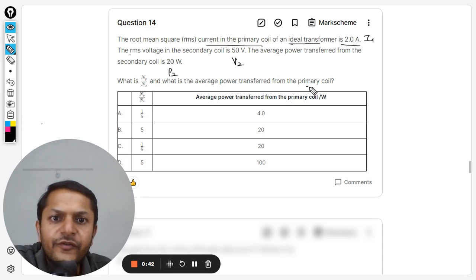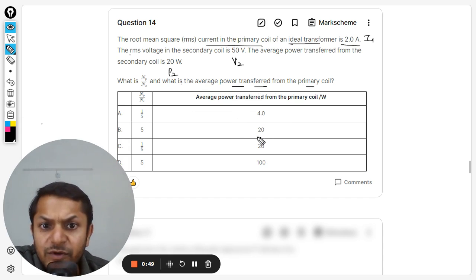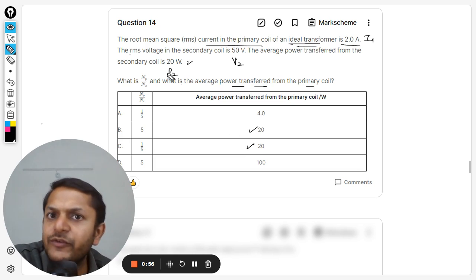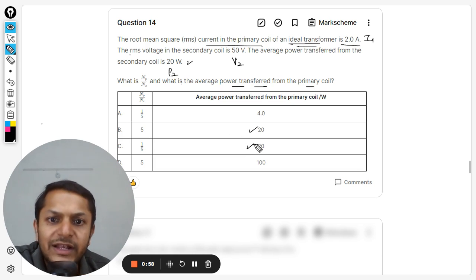What is the average power transferred? Well, the average power transferred will be exactly the same, isn't it? Because it says that it is an ideal transformer, so there is no leakage. So the power output will be equal to power input. Clearly, the answer will be either B or C.